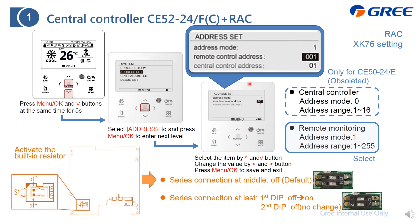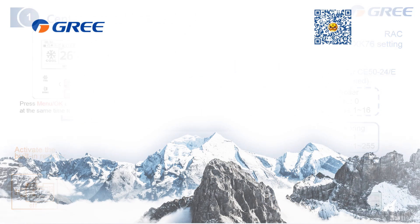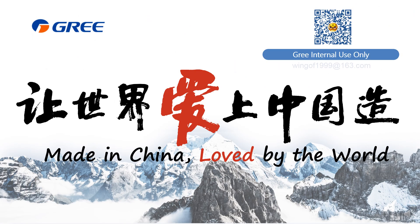Besides, if this wire controller SK76 is located at the last position, you also need to turn on the built-in resistor by changing the DIP switch located here. There are two DIPs — just change the first DIP from OFF to ON. Then you can turn on the built-in resistor to ensure proper communication. That's all for this part of the presentation. If you have any questions, please feel free to contact me on my personal email address. Thank you very much.